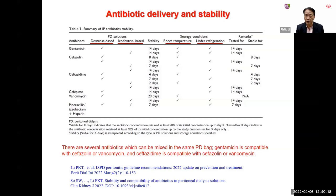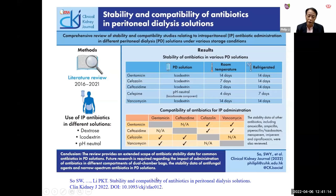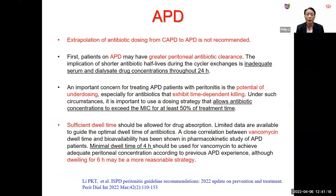Regarding antibiotic stability in PD fluid, a table in the guidelines shows stability of various antibiotics in dextrose-based or icodextrin-based PD solutions at room temperature versus under refrigeration — stability is generally higher under refrigeration. Compatibility data are also provided: gentamicin is compatible with cephalothin and vancomycin; cephalosporin is compatible with cephalothin and vancomycin. A recent Clinical Kidney Journal review comprehensively covers stability and compatibility of antibiotics in PD solutions including icodextrin and PD-neutral at various temperatures.